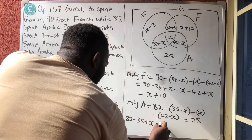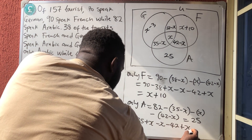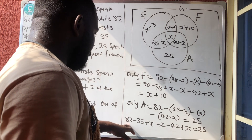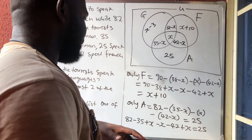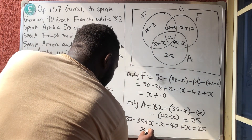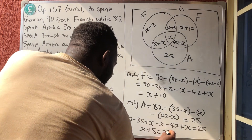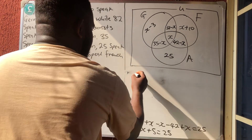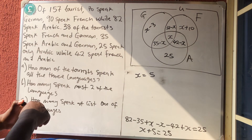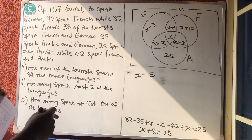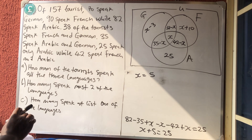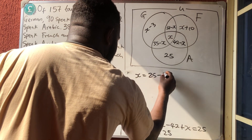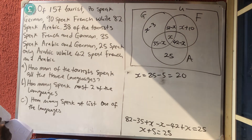Opening the brackets: 82 minus 35 plus x minus 42 plus x equals 25. Simplifying: 82 minus 42 is 40, minus 35 is 5, and x plus x gives x — wait, the x terms cancel, leaving 5 equals 25, so x equals 5. Therefore, 5 tourists speak all three languages.